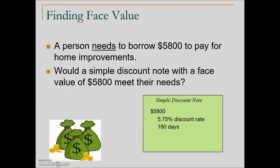The face value or maturity value of $5,800 has a discount rate in this example of a little less than 6%. The term is 180 days. If we calculate the bank discount — this is the charge for the use of the money — because it's a discount note, that bank discount is subtracted from the face value, which means this individual during the 180 days only has the proceed amount, which is $166.75 less than what they intended to borrow.